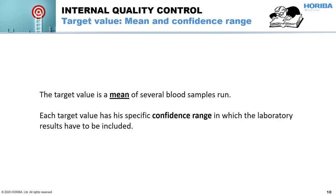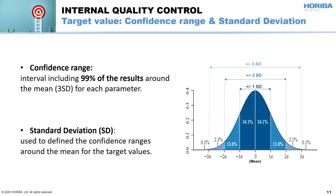The target value is simply a mean of several control sample runs. As we cannot expect the laboratory to exactly reach the target values, the results have to be inside a certain closeness to the target value. This closeness around the mean corresponds to the confidence range, which should statistically include 99% of the results and corresponds to 3 standard deviations, or ±3 SD. ±2 SD includes 95% of the results, and ±1 SD includes only 68% of the results.